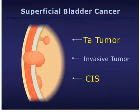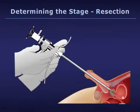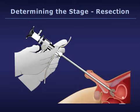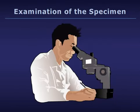Here is a closer view of a Ta tumor and carcinoma in situ compared with an invasive tumor. The most important part of the process to determine the stage of the tumor is a surgical procedure called tumor resection. A resectoscope is inserted through the urethra into the bladder, and a wire loop at the end of the scope is used to remove or burn off tissue with high-energy electricity. The surgeon cuts into the tumor and the wall of the bladder right into the muscle layer so that the depth of tumor growth can be determined. A specialist called a pathologist will examine all of the tissue collected from the resection and inspect it under a microscope.